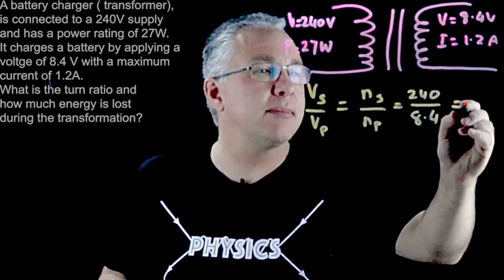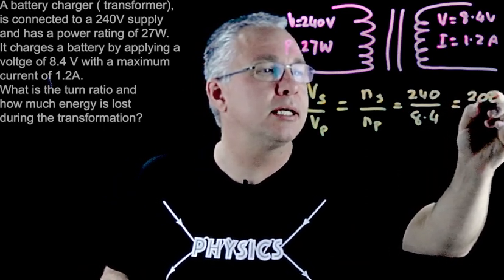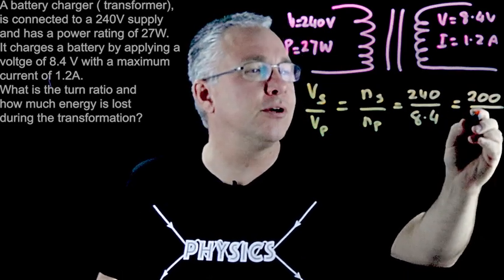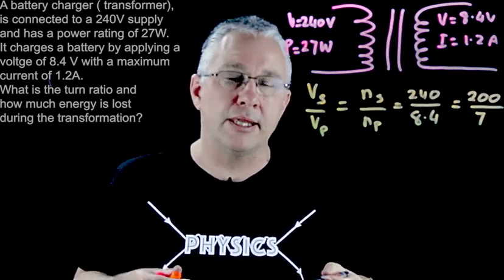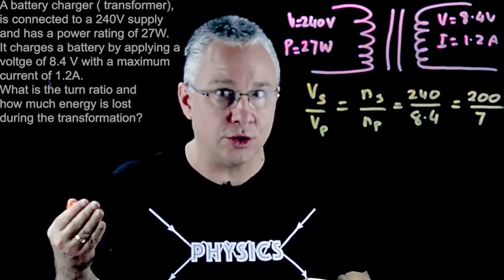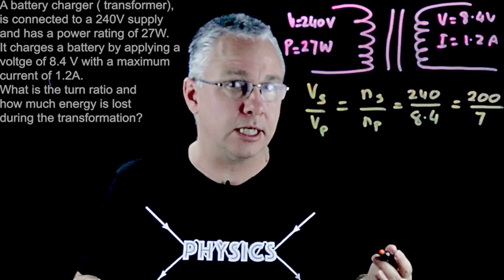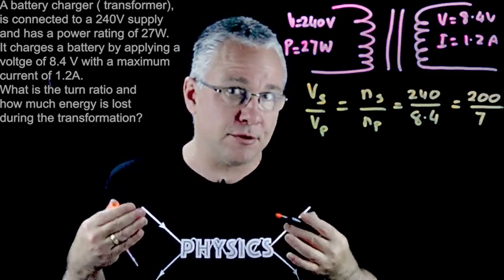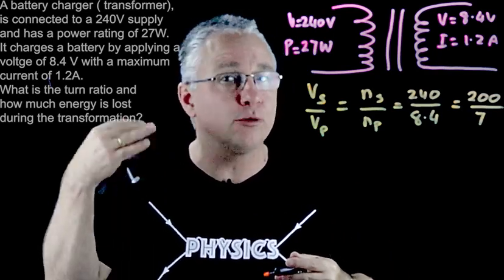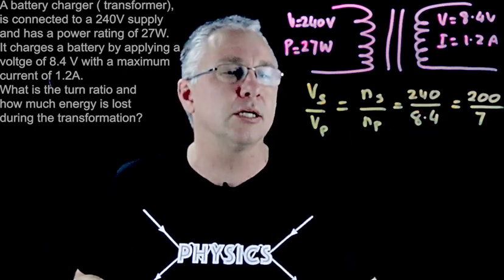Now the turn ratio happens to be, at least in terms of a fractional form, as 200 to 7. That means for every 200 turns in the primary coil we have only 7 turns in the secondary coil. It doesn't have to be 200 turns, it could be 400, it could be any, as long as it's consistent with this ratio.